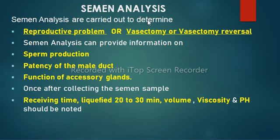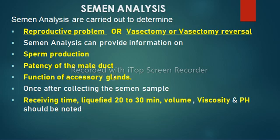Semen analysis is carried out to determine whether a reproductive problem is causing male infertility, or whether a vasectomy or vasectomy reversal has been successful. Vasectomy is a surgical procedure for male sterility or contraception. Semen analysis is a singular test for infertility in males that can provide information on sperm production, potency of the male duct, and function of accessory glands. Since semen samples vary day to day, 2-3 samples are evaluated within a 3-6 month period.